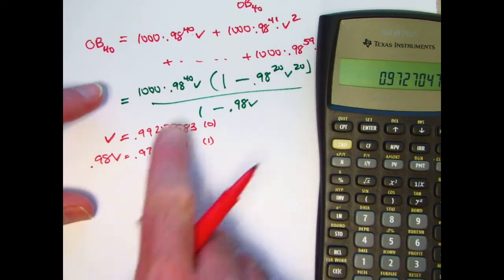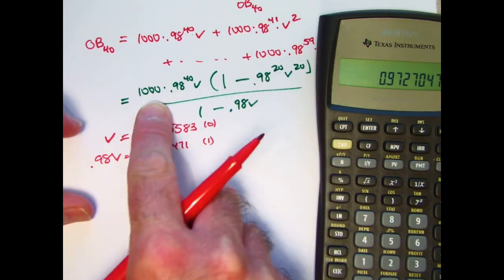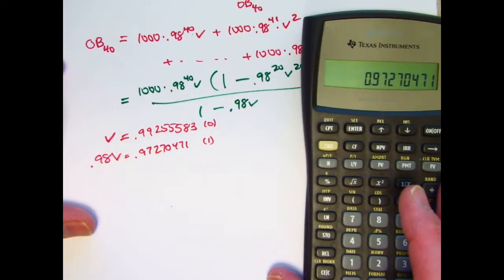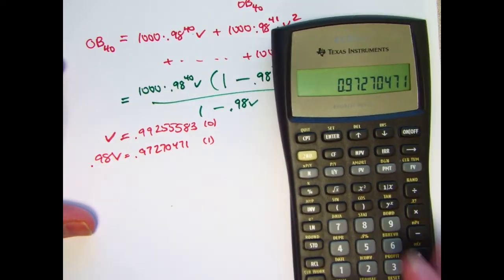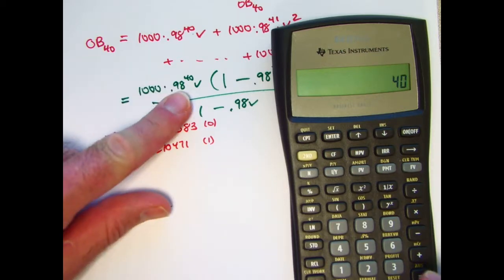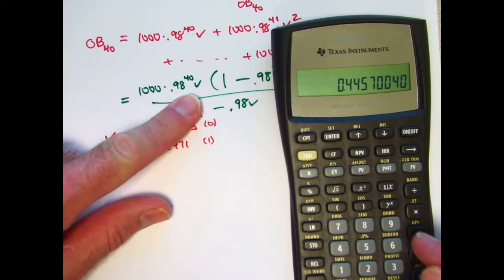Let's also, before I do these subtractions here, let's also find this thing, the first term. So I've got 0.98 to the 40th power, times V.